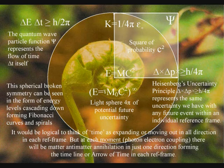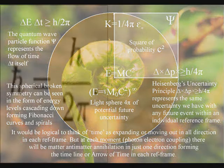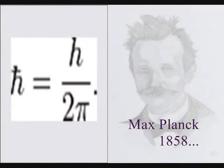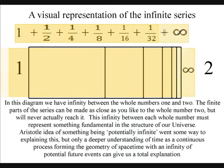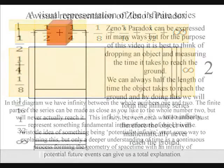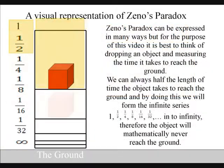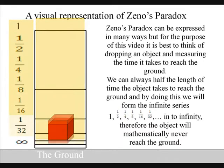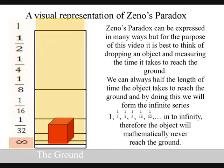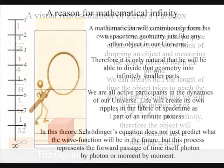In this theory, the Planck constant is a constant of action and is continuously coming into existence, photon by photon, or moment by moment. This is part of a continuous process of change or creation. Therefore, we have a true infinity that can continuously be halved or divided over a period of time.